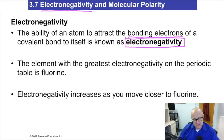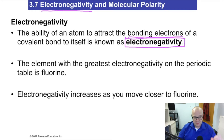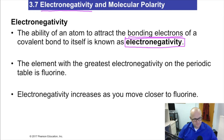We know from our studies of ionic bonding that metals give up their valence electrons to nonmetals. Sodium gives this electron to chlorine, lithium to fluorine. Metals lose electrons to nonmetals. So if metals are losing electrons and nonmetals are gaining electrons, that must mean that nonmetals are actually really good at stealing them, and metals are really good at being stolen from.